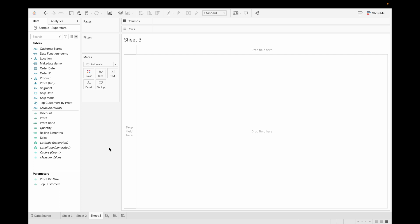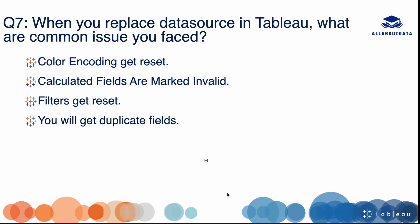Our next question is: when you replace a data source in Tableau, what common issues do you face? First, color encoding gets reset — if you used custom color encoding, it resets and you need to reapply it. Second, calculated fields are marked invalid if some fields from the old data source are not present in the new one — those fields will show an exclamation mark. Third, filters get reset. Fourth, you will get duplicate values. Thank you so much guys — if you liked the video, please like, share, and subscribe, and stay tuned for upcoming videos.